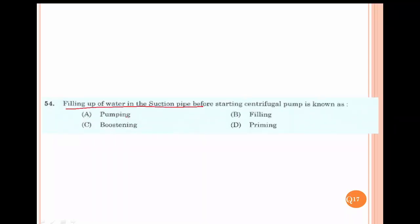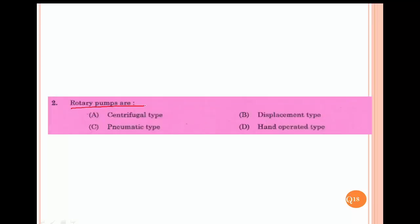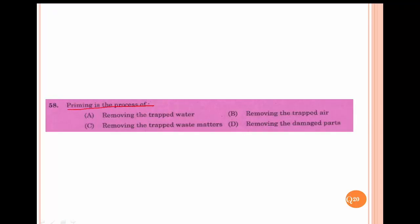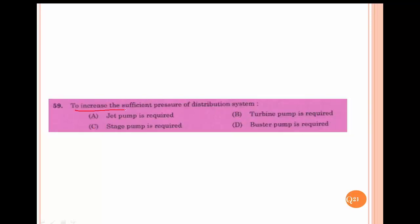Priming is the process of filling up water in the suction pipe — removing trapped air. Rotary pumps are positive displacement type. Water is mechanically lifted by means of a pump. Priming is the process of removing trapped air. To increase sufficient pressure in the distribution system, we use a booster pump. The answer is D — booster pump.